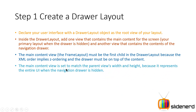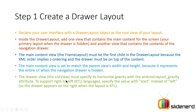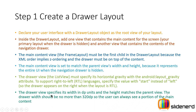The main content FrameLayout is set to match_parent for both width and height because it represents the entire UI when the navigation drawer is hidden. The drawer view — the ListView — must specify the android:layout_gravity attribute: either start or left to place the drawer on the left, or end or right to open from the right. Make sure the drawer width is between 240 and 320 dp.